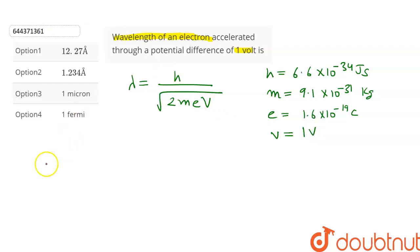Let's substitute these values in the equation. This will give us lambda is equal to 6.6 into 10 raised to the power minus 34 upon under root of 2 into 9.1 into 10 raised to the power minus 31 into 1.6 into 10 raised to the power minus 19 into 1.